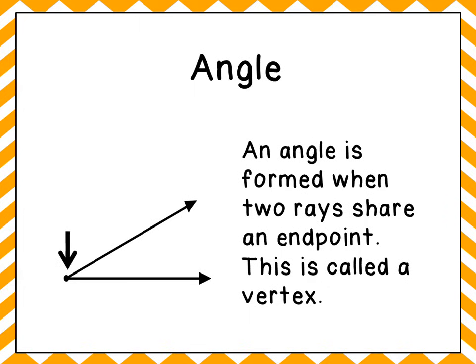If you take a look right there where the arrow is pointing, that would be the vertex. That would be where the two rays, and you can tell it's a ray because it has a dot on one end and an arrow on the other. They're both rays. That's called the vertex.